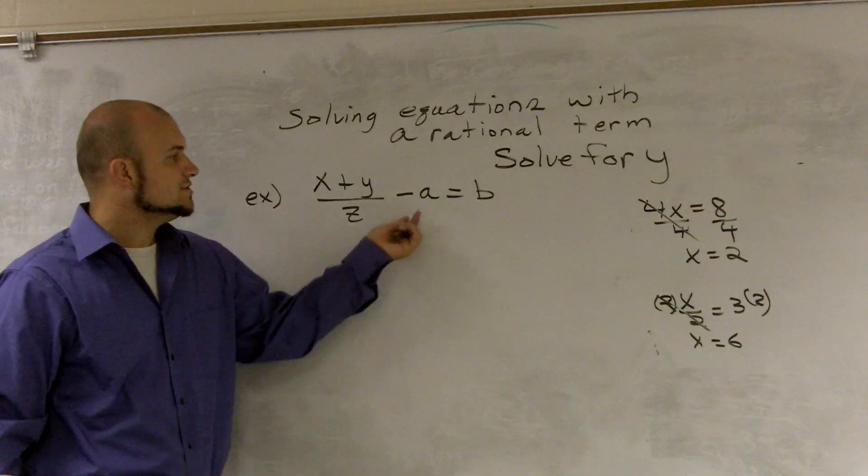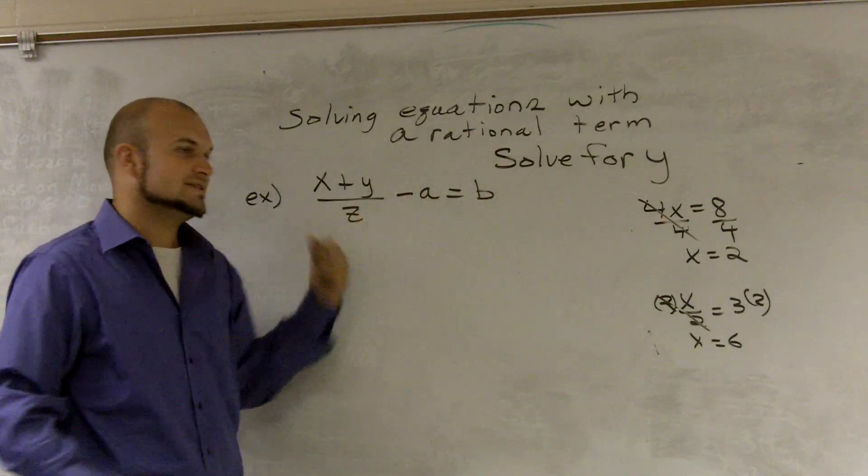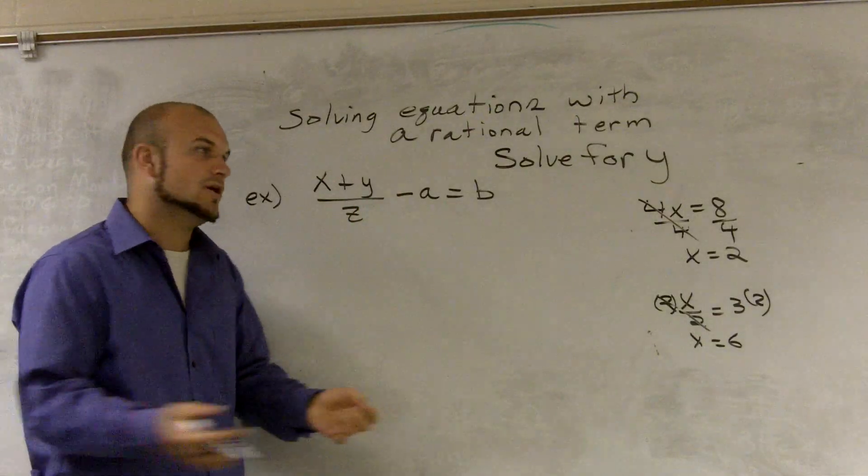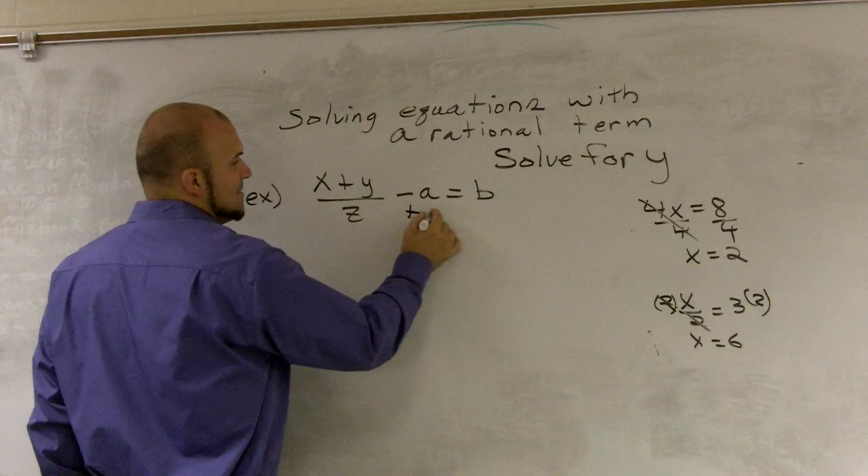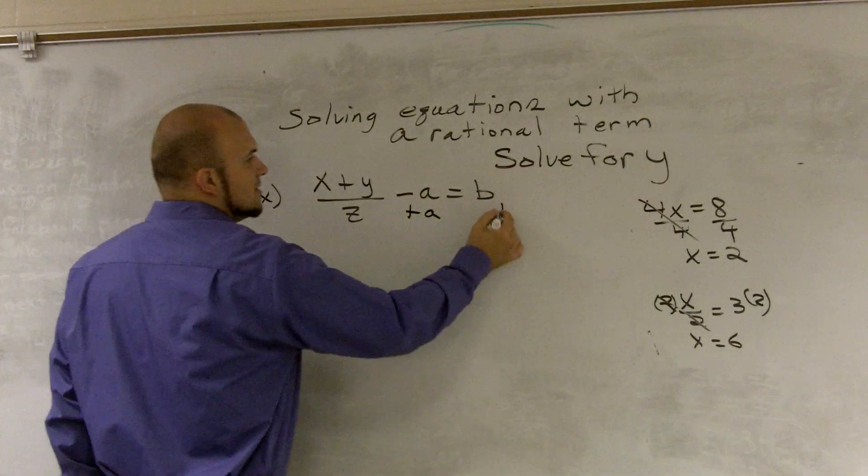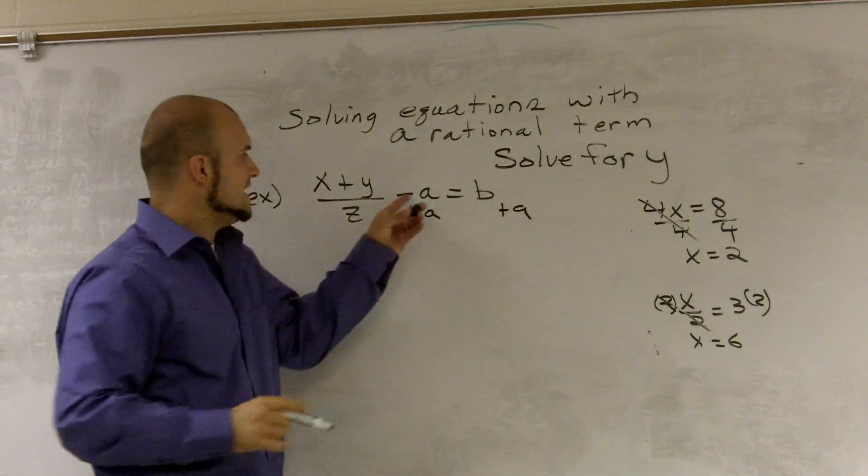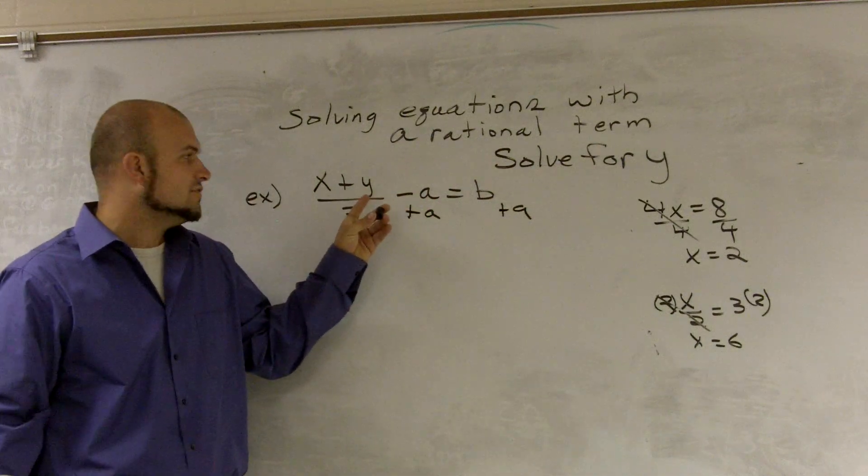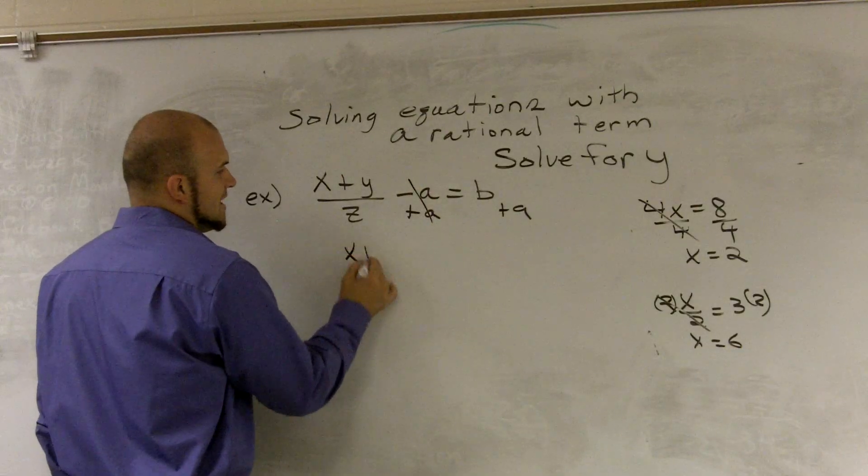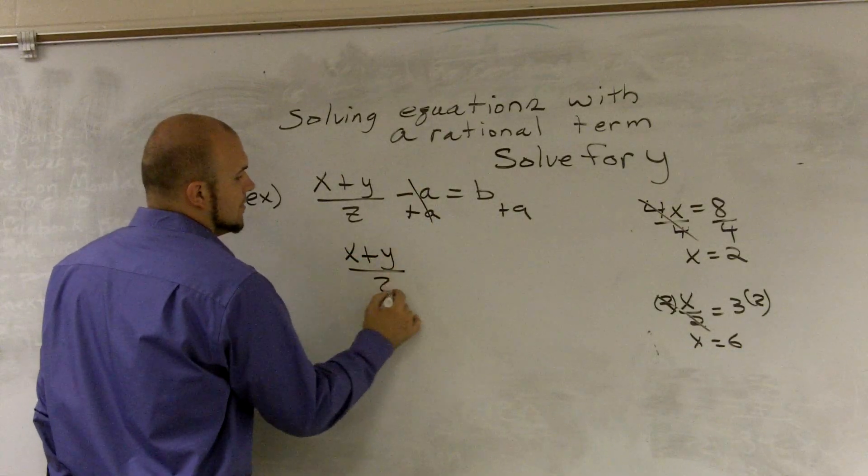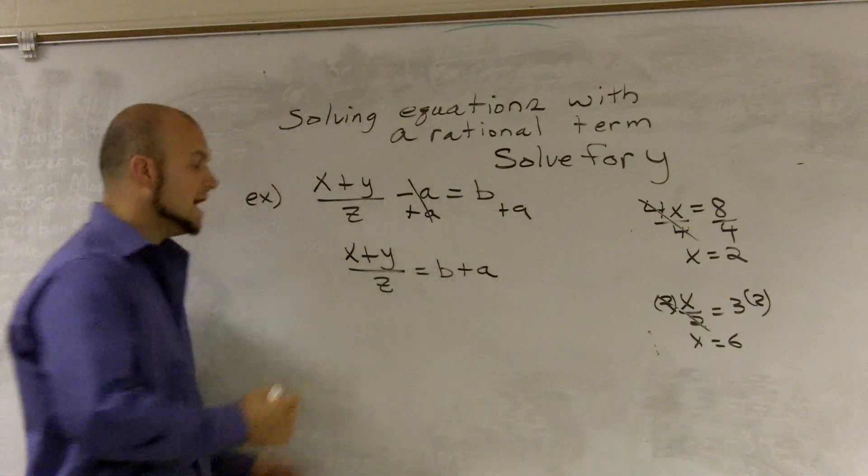I'm going to put the a onto the other side and then multiply by the z. It doesn't really matter which way you go. But to me, this seems like an easier process. So I'm going to add an a because that's the inverse operation that a is subtracted from our variable we're trying to solve for. So I'm going to add an a. That's going to cancel out to become 0. So therefore, I'm going to add x plus y over z equals b plus a.